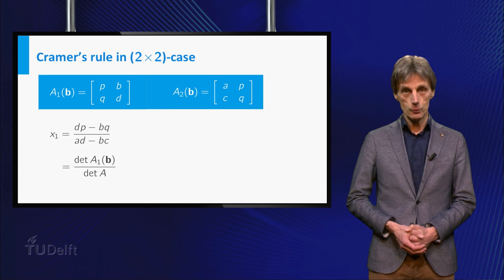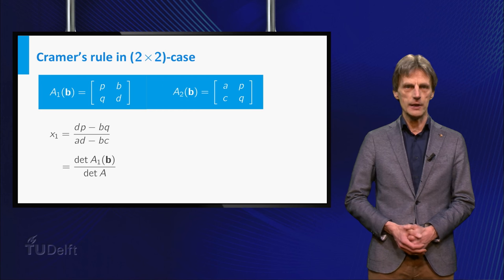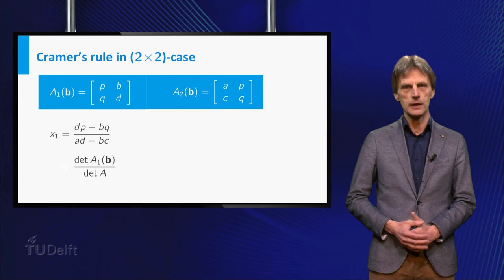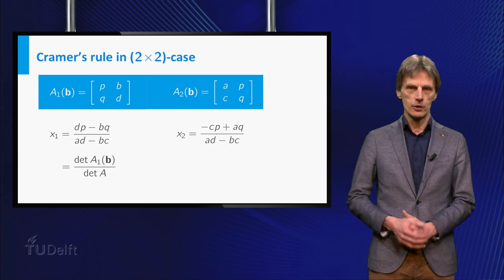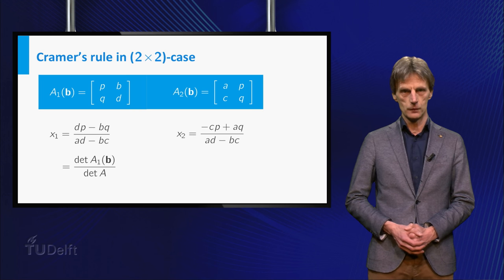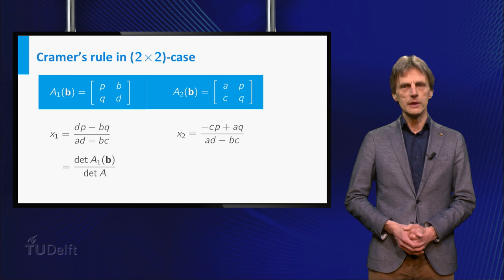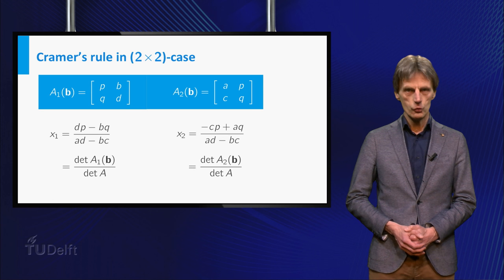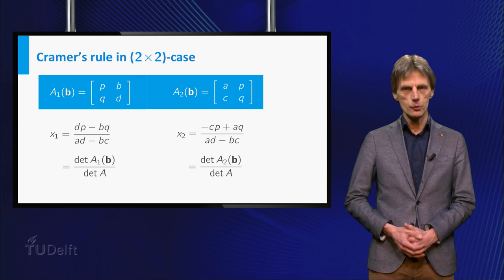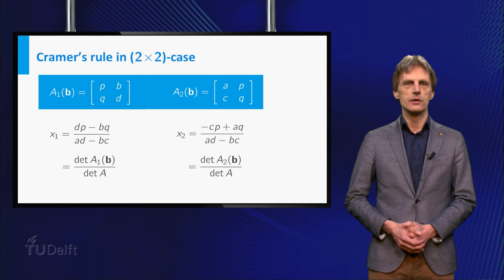Similarly, let A2(b) denote the matrix which is obtained by replacing the second column of A by the vector b and have another look at the formula for x2. Its numerator is equal to the determinant of A2(b), so x2 is equal to the determinant of A2(b) divided by the determinant of A.